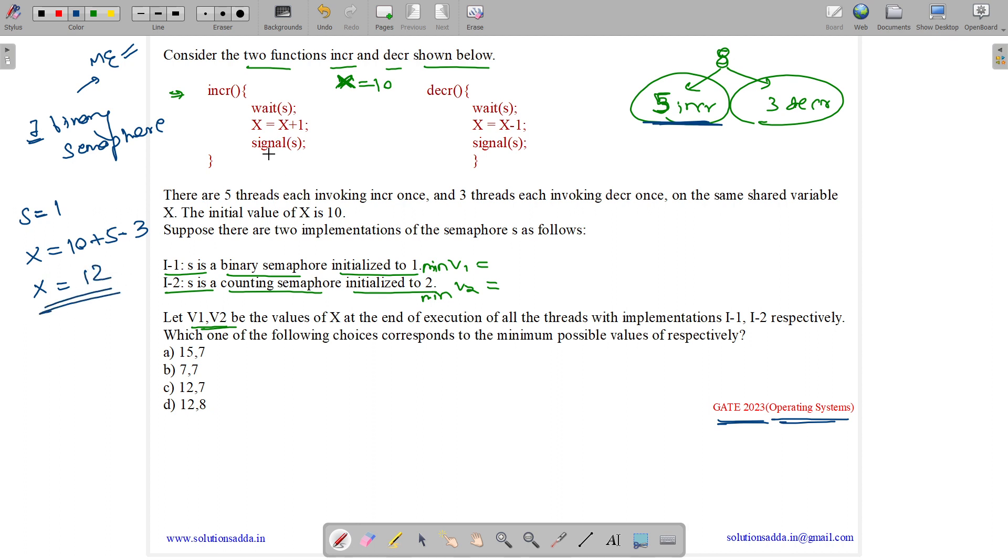In every case, whatever be the case, if we have increment, decrement, increment, decrement, increment, decrement, then 2 increments, whatever be the permutation of all these 8 operations, we will always get a 12. So minimum of V1 is 12.